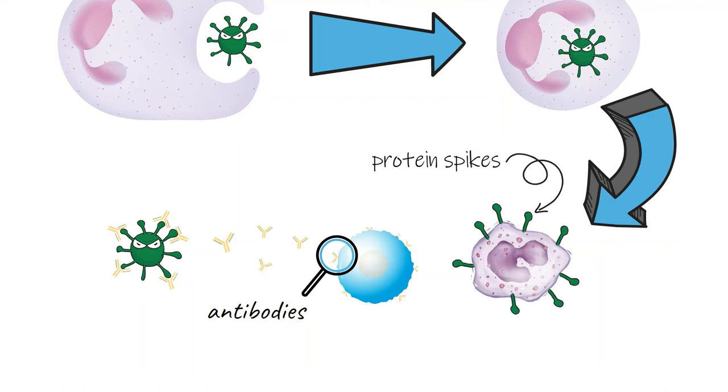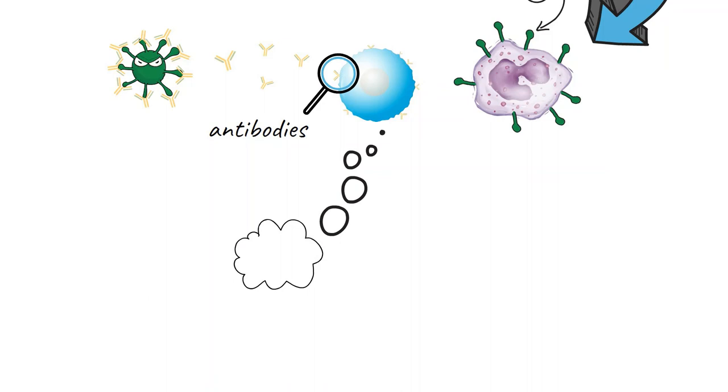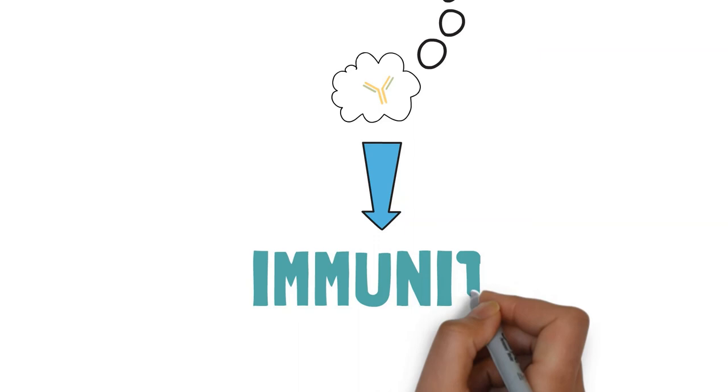Once B cells have made antibodies for a particular virus, they will usually remember it for a long time. If the virus comes back, the B cells make more antibodies straight away before it can hurt you. This is called immunity.